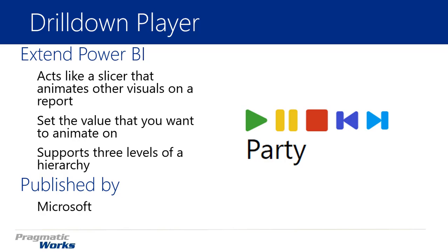On the right-hand side it kind of looks like a 1980s Walkman — play button, pause button, stop button, fast forward, and that kind of thing. You can put any categorical or even measure data on this to animate the results. You take that data, place it inside the Drill Down Player, hit the play button, and you'll see the rest of the report do cross-highlighting based on the selection currently displaying inside the Drill Down Player.